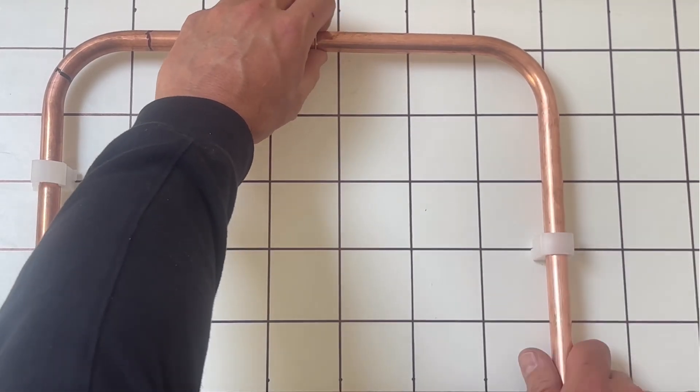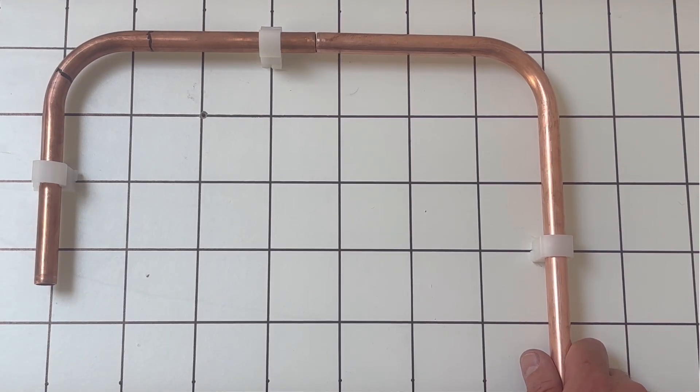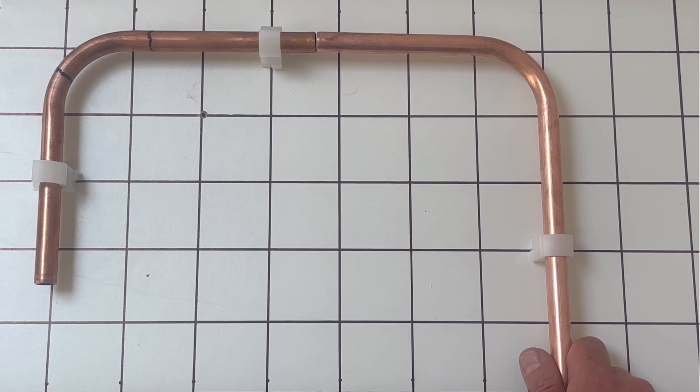There you go guys. So that is how you do a 90 degree bend with copper pipe using the graph board. Look out for our next video guys and thanks for watching.